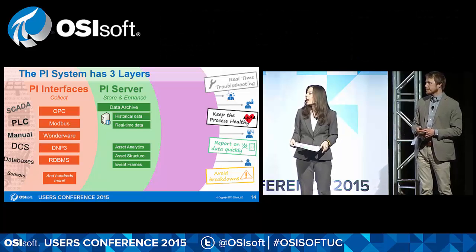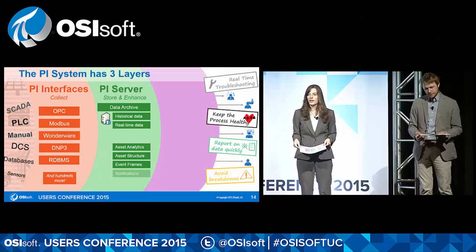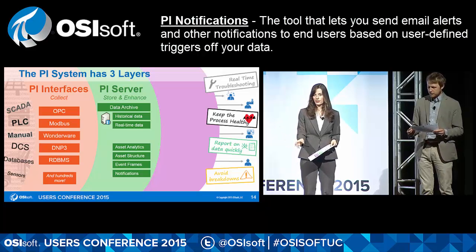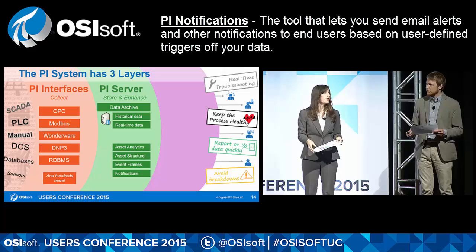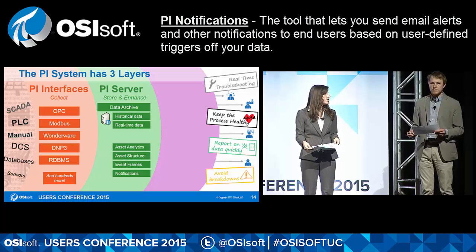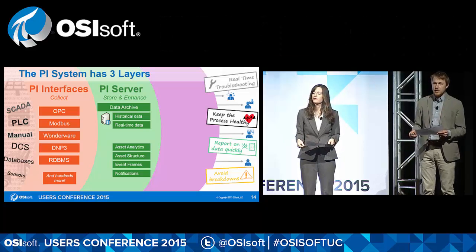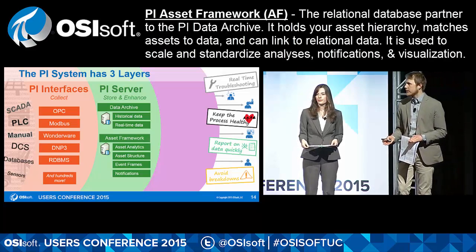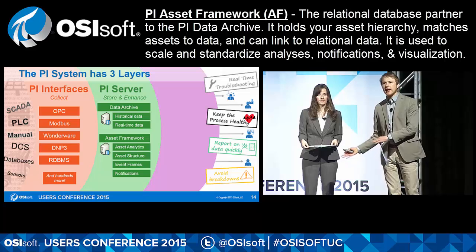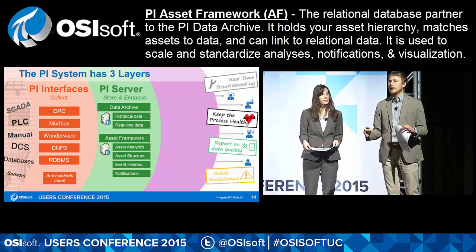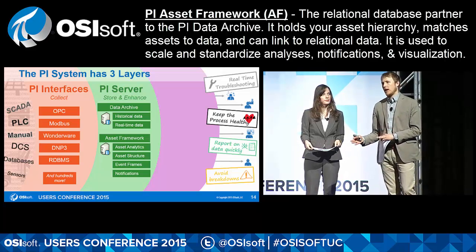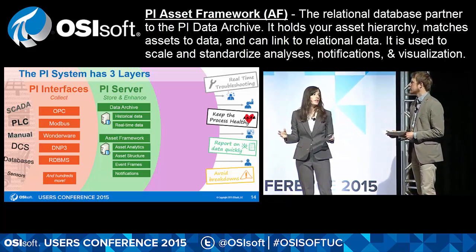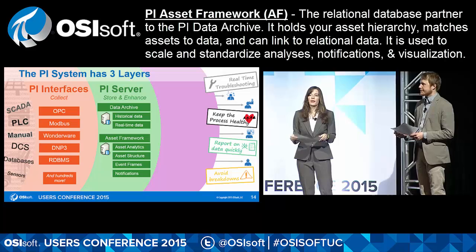There are also PI Notifications, which let you set up alerts based on specific conditions on your data and receive email notifications from those alerts right away. All of this takes place in the Asset Framework Server, which is the human-friendly side of the equation — it makes data easily digestible for people. This is the side of the PI Server that has really evolved over the last five years, where all the new and exciting functionality is built.